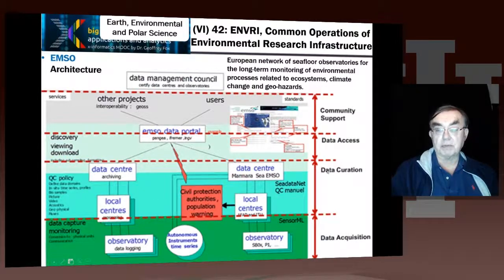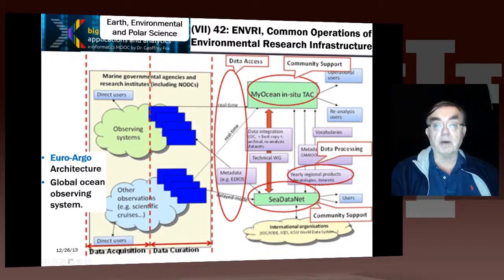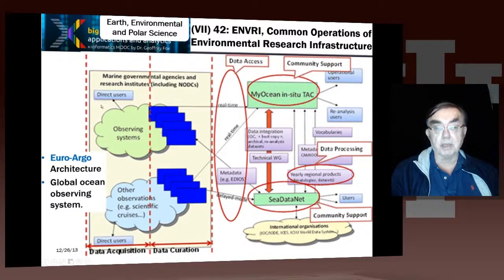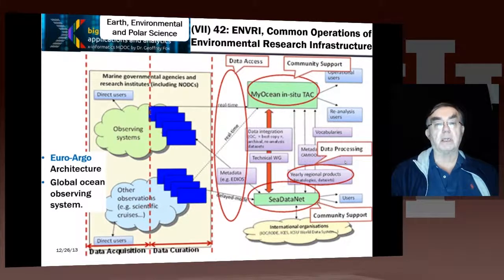The same categories identified by ENVRI as critical infrastructure categories appear across all these systems. EuroArgo, the European version of the Argo Global Ocean Observatory System, also uses the ENVRI categories: data access, community support, data processing, data acquisition, and data creation. The data enters from the side with community resources handling different types of conversion. ISCAT is the other infrastructure in ENVRI, but since we already covered its architecture, it is not repeated here.